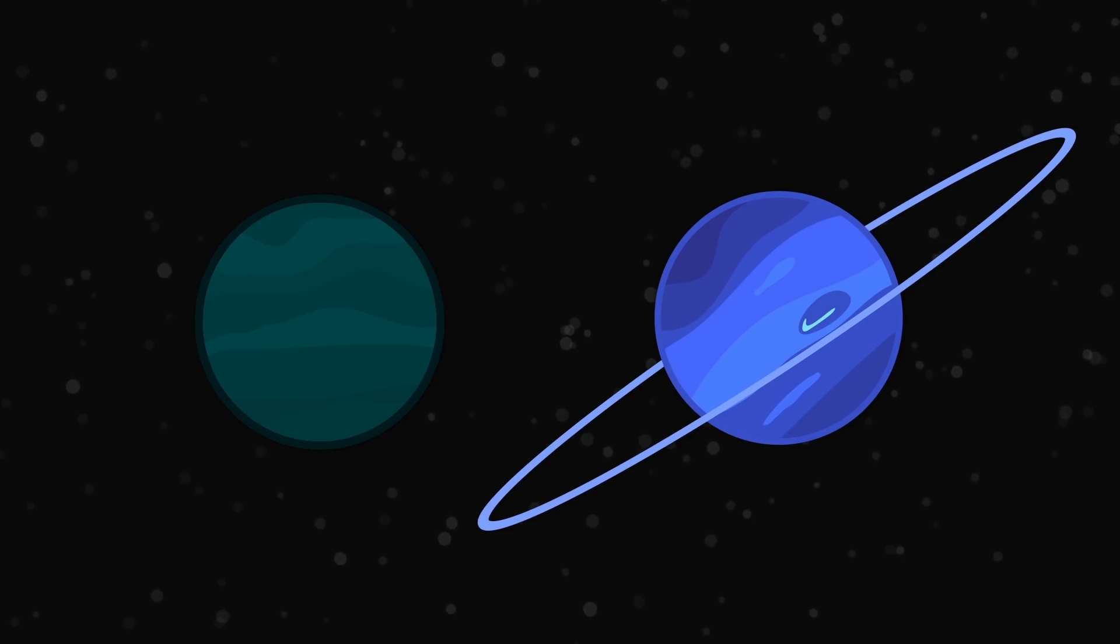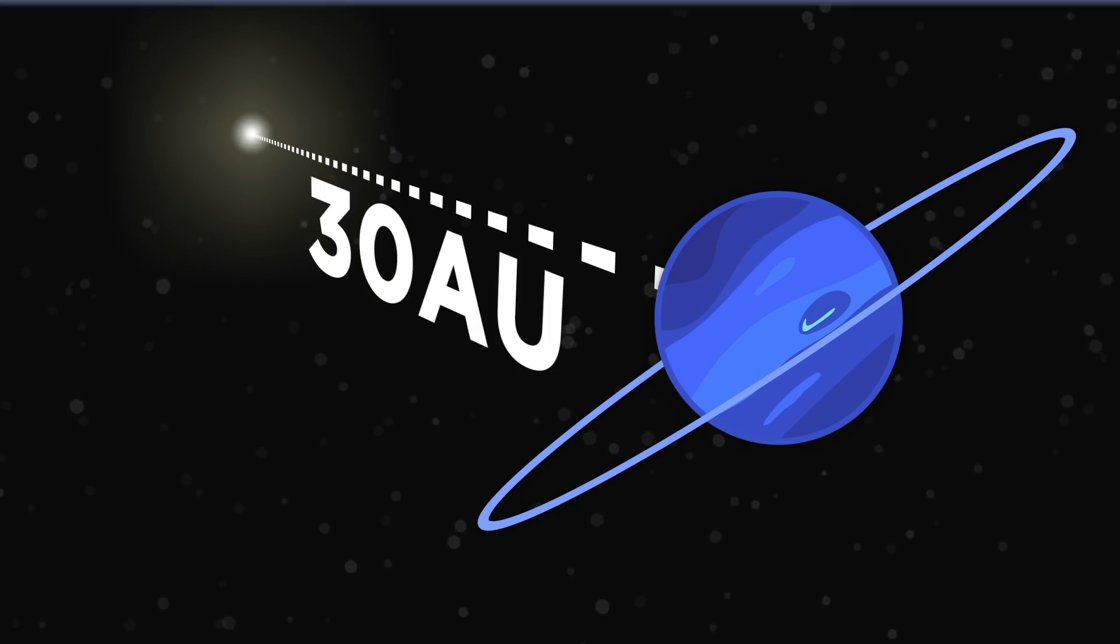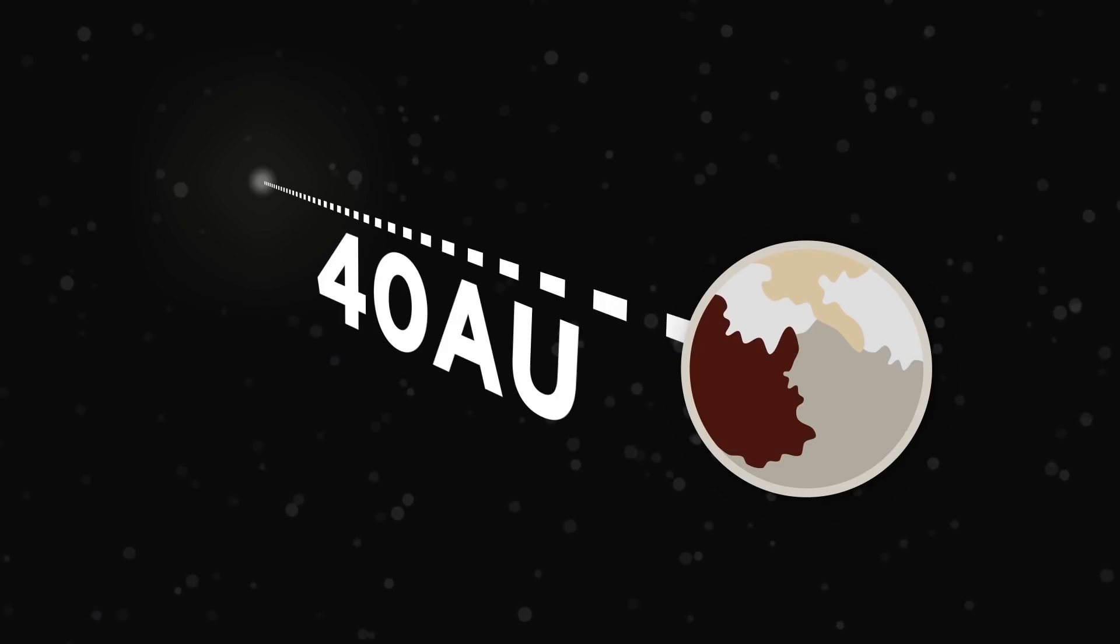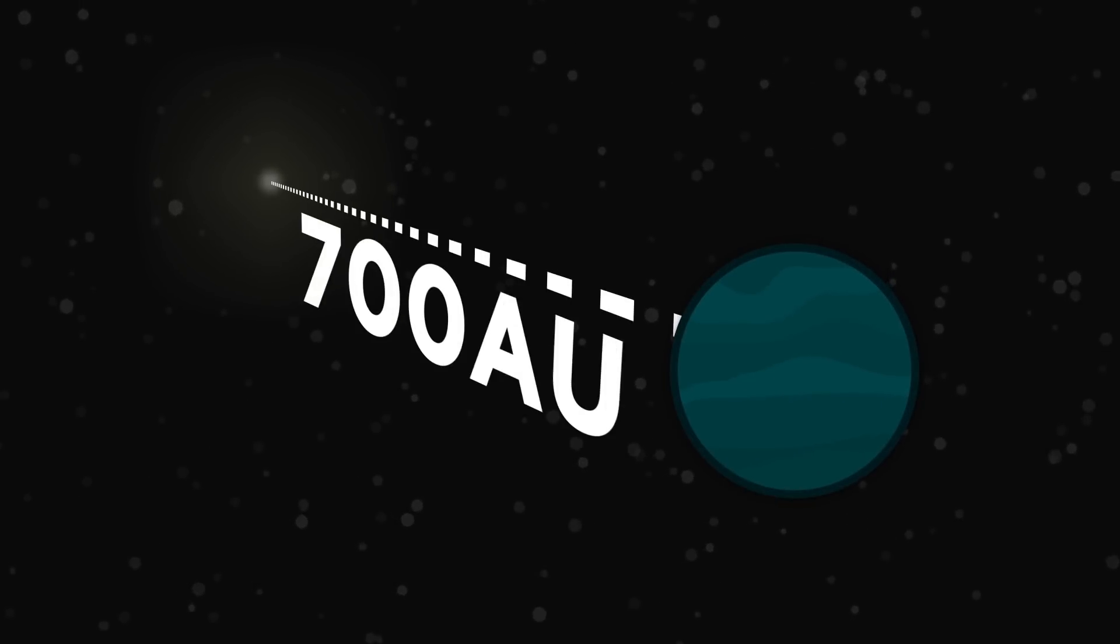Neptune is only an average distance of 30 astronomical units from the sun. One astronomical unit, meaning the distance between the sun and Earth. Pluto, meanwhile, is usually 40 AUs from the sun, while planet 9, if it exists, would be located an average distance of 700 AUs from the sun.